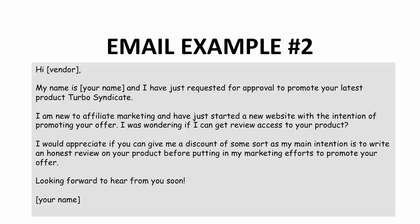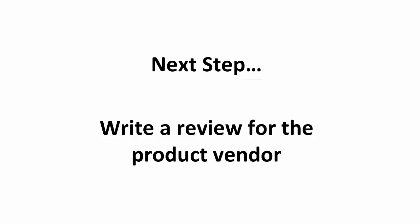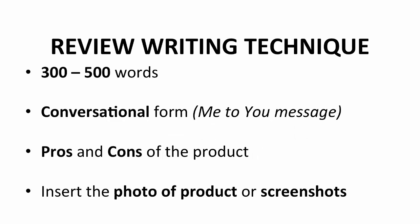Here is a second email example for a newbie. The same format is applied. The only difference is you reveal to the product vendor that you're new to affiliate marketing, and then state the purpose of you sending this email. Short and precise. Now that you already know how to get access to a review product from the product vendor, the next step will be writing a review article for the product. Review writing is an essential in affiliate marketing. A good review article can increase the conversion rate, hence increase the purchasing rate through your affiliate link.